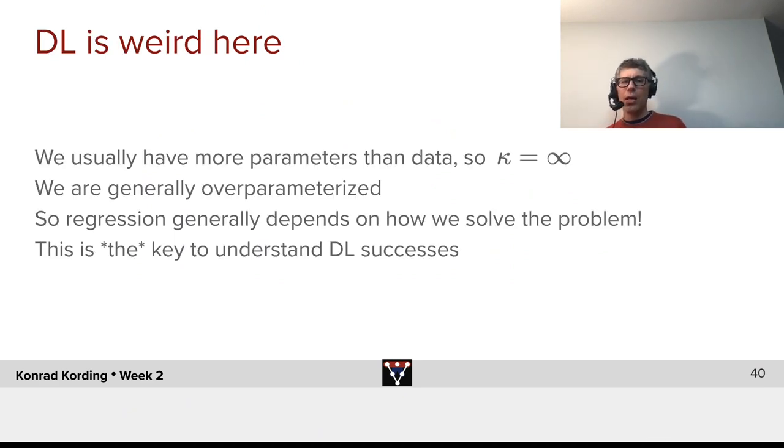And deep learning is really weird in lots of ways here. In many cases, we have more parameters than data. So, what does that mean? Say, if we build a big system solving computer vision problems, we might have millions of parameters. Or for some text problems, we might have billions of parameters.